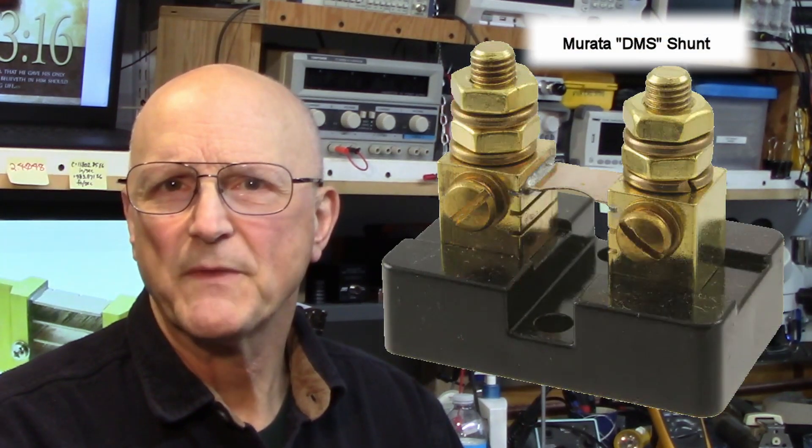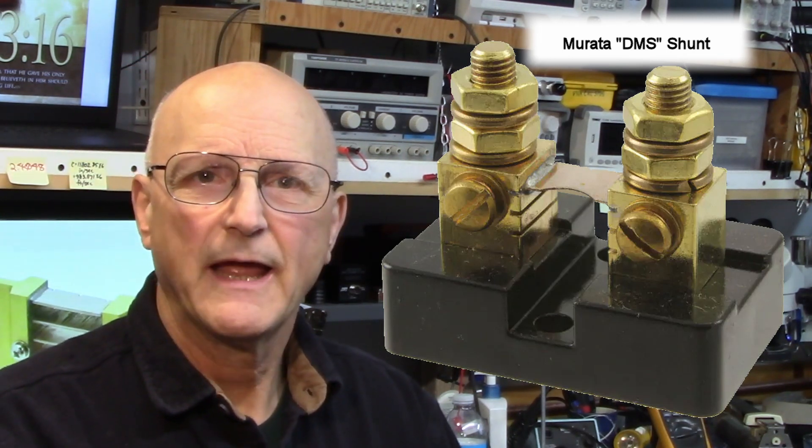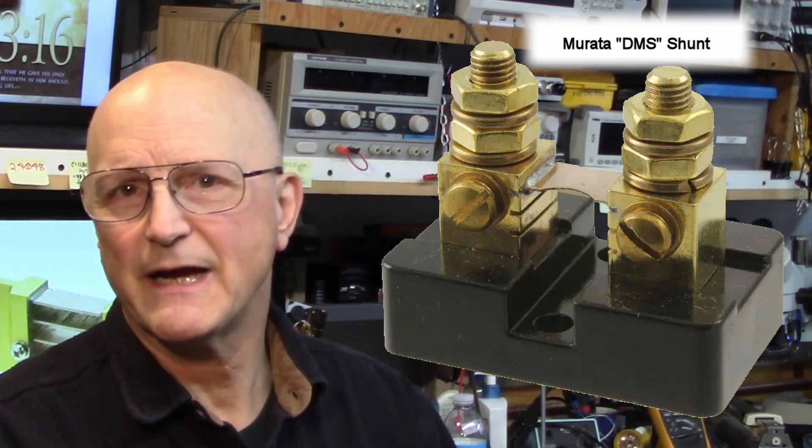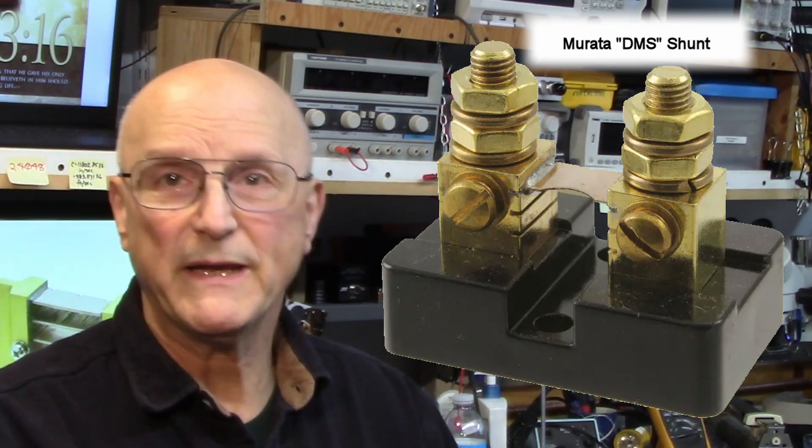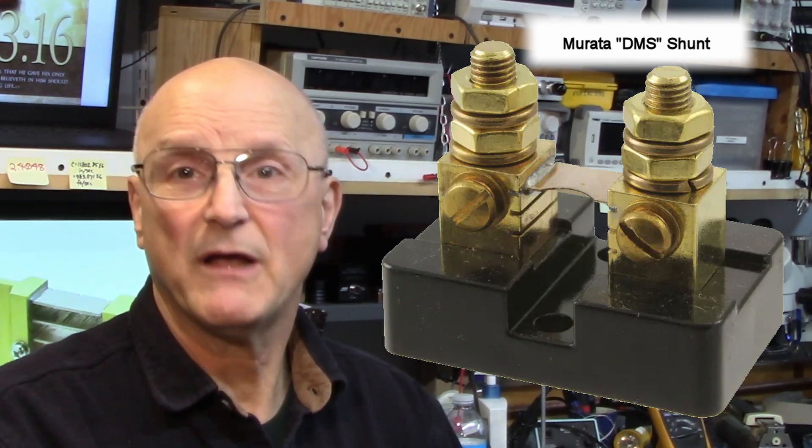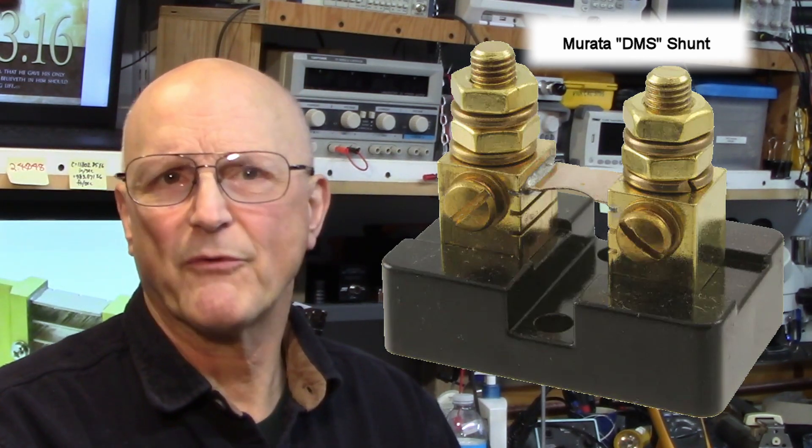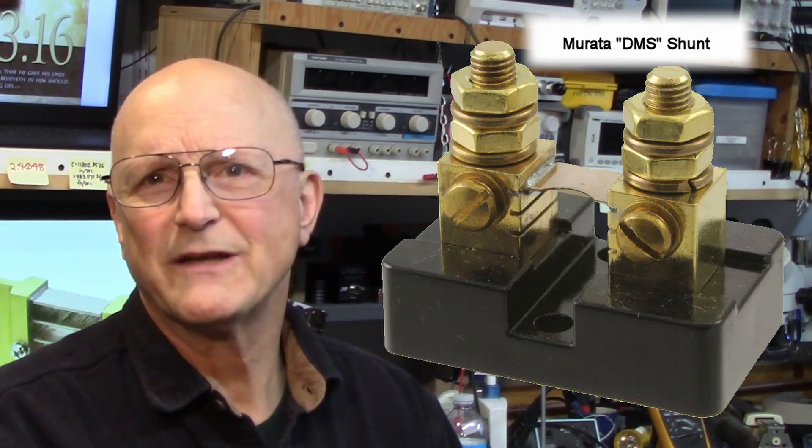While this is a conventional Kelvin connection, it isn't always quite so obvious what we're doing. Here's a case in point. The big bolts on the top are the current connections and the small screws on the side are the voltage connections. They're all on the same big block of metal. Now while we are making the same kind of connection, the separation between the current and the voltage connections are not quite so obvious.